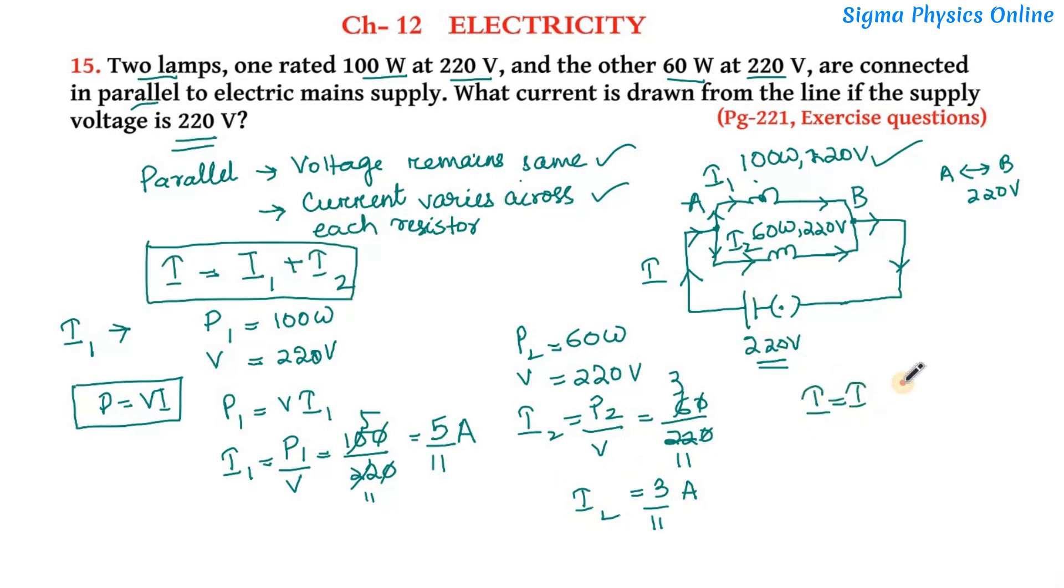So the total current I will be I1 plus I2 which is 5 by 11 plus 3 by 11 which is 8 by 11 which is 0.727, so I is 0.73 ampere. So this is your answer, that is the current flowing